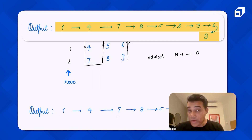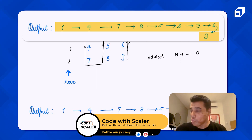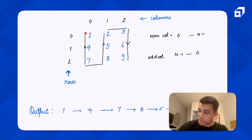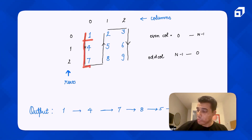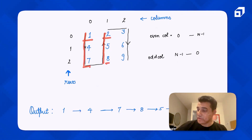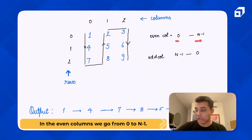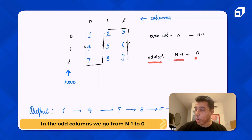If you try to print elements in this order, one observation you would make is that when going through the 0th column you go from the 0th row to the last row, but when going through the first column you go from the last row to the first row. Similarly, when going through the second column you go from the 0th row to the last row. So when you have an even column you go from 0th to n-1th row, and when you have an odd column you start from n-1 and go up to 0.